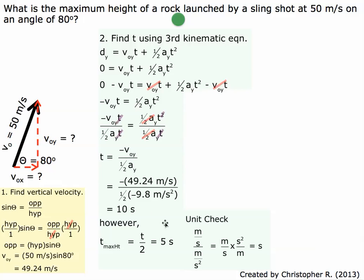Before finding the height, let's do a unit check. We have meters per second divided by meters per second squared. Flipping the denominator gives meters per second times seconds squared over meters. The meters cancel, and one second cancels with a second squared, leaving seconds — which matches our answer. So more than likely we did this correctly.